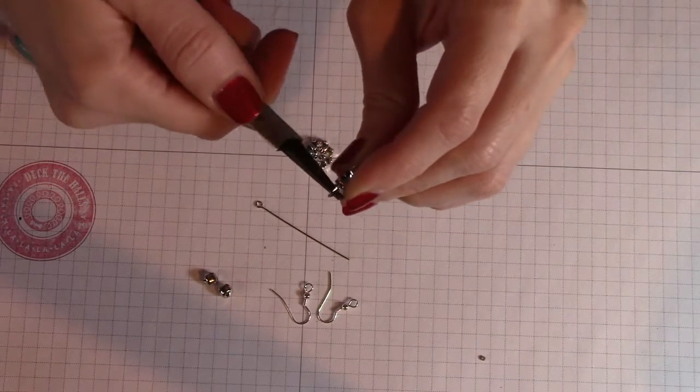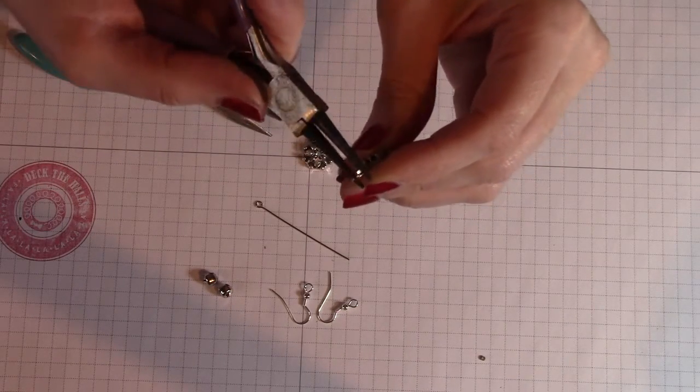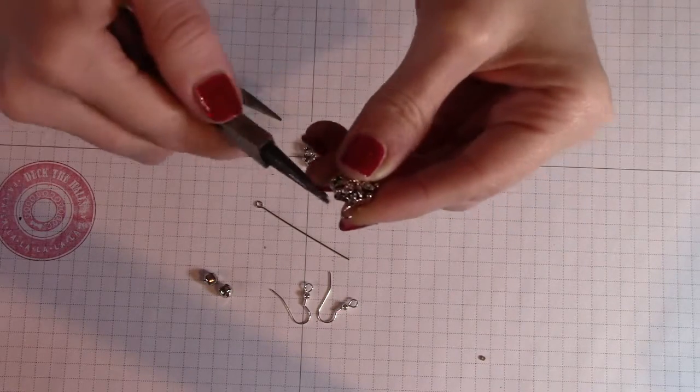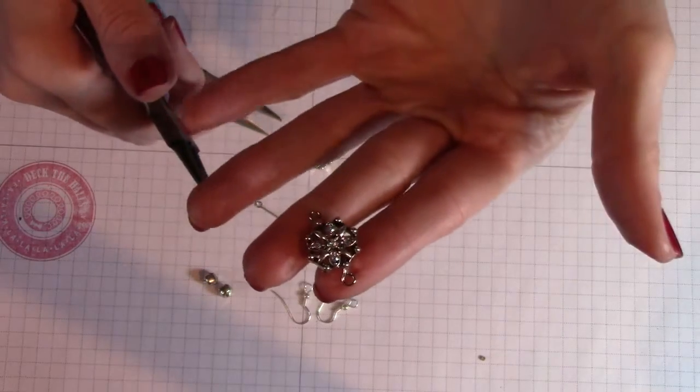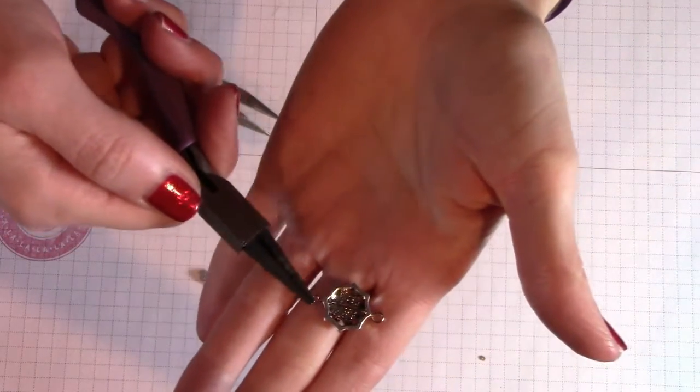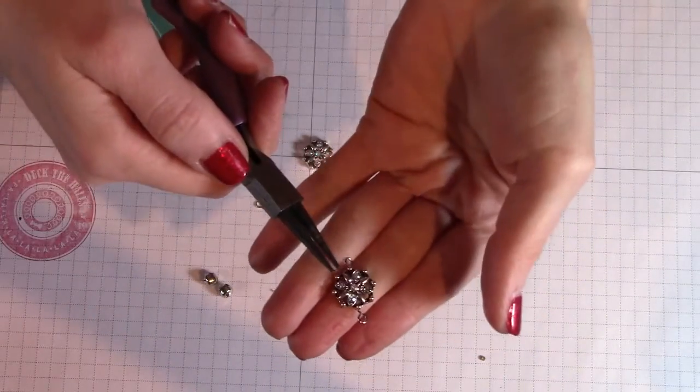So generally you want to cut it so that it'll make a loop and you only want as much as you need to make that loop. But you know it's a little bit of trial and error. See I made that just a wee bit too big. So we're just going to bend that down and around and there you go. You've got a loop. So you've got it going through the back, loop at the bottom, loop at the top.